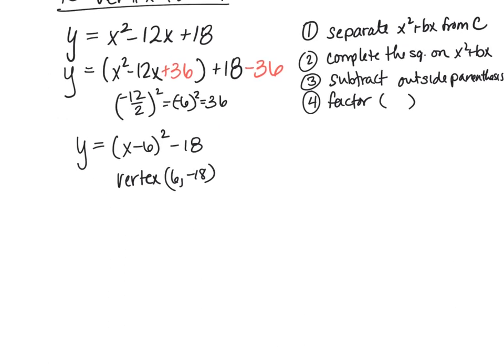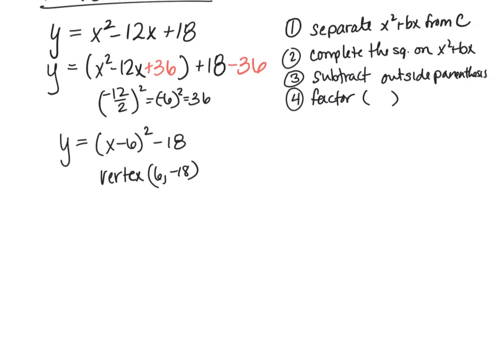Let's look at another example with a coefficient. y equals x squared plus 8x plus 18. Apparently today I like the number 18. This one doesn't have a coefficient, so we'll just do this, and then we'll do a coefficient next. So we're going to do x squared plus 8x, keep the 18 on the outside of the parentheses.